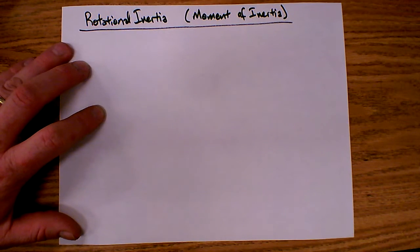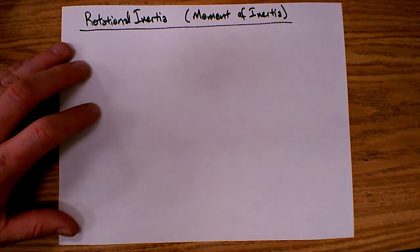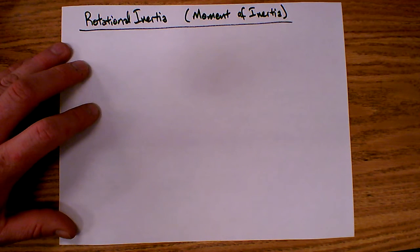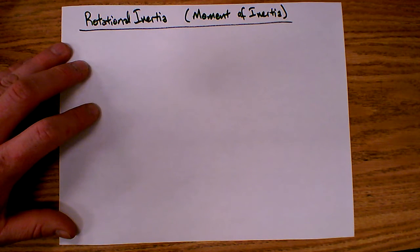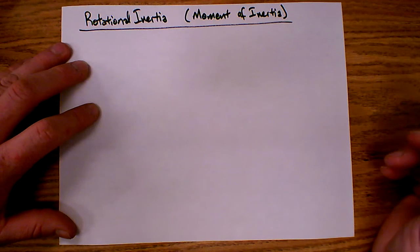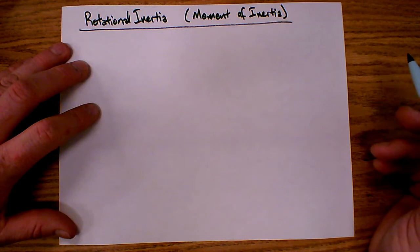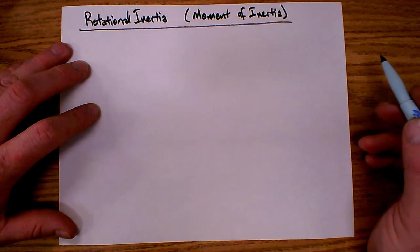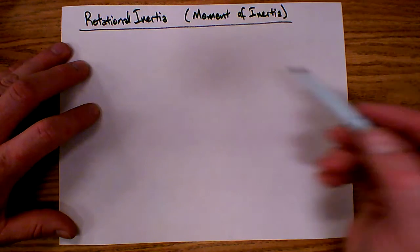Today we're going to talk about rotational inertia, or moment of inertia. Inertia is a resistance to a change in motion. For linear motion, inertia is measured as mass, because the more mass an object has, the more resistant it is to a change in its motion. Rotationally, it's not just about the mass, but also about where the mass is located — how the mass is distributed.